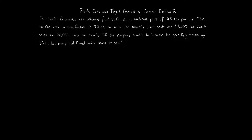Break-even and target operating income problem 2. Fruit Sushi Corporation sells delicious fruit sushi at a wholesale price of $5 per unit. The variable cost to manufacture is $2 per unit. The monthly fixed costs are $7,500. Its current sales are 30,000 units per month. If the company wants to increase its operating income by 30%, how many additional units must it sell?